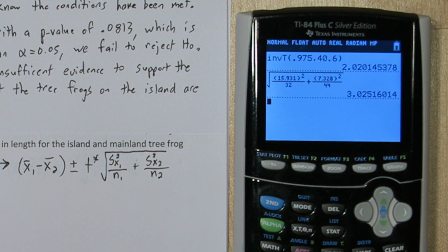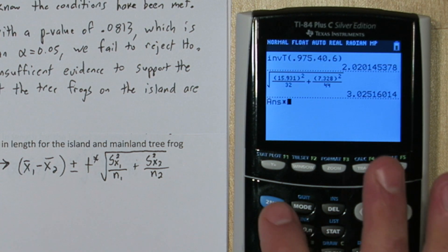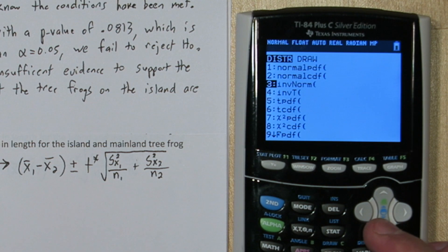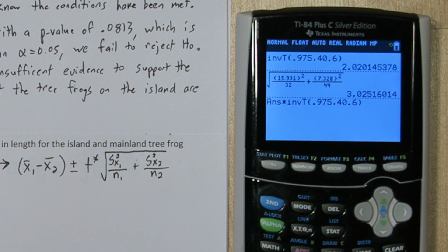Alright, so my standard error is about 3.03. I'm going to multiply that by our exact value of our T star by using inverse T again. And there's our margin of error, 6.111 approximately.